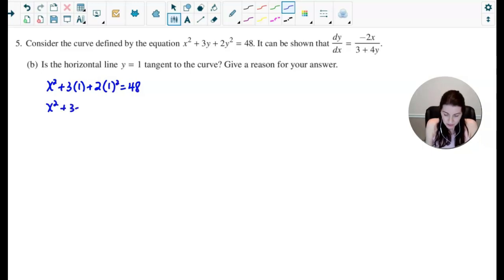Or x squared plus 3 plus 2 equals 48. That would sum to 5, and I'll go ahead and subtract that over. And so then I see that x could be either the positive or negative value of the square root of 43. So essentially, you have two points that would have a y-coordinate of 1, and that would be at the point of root 43, 1 and negative root 43, 1.